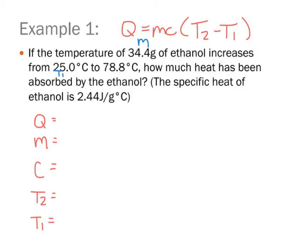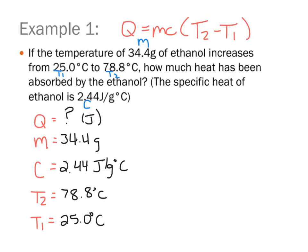increases from 25, so that means that's the initial or T1, and it goes up to 78.8, that's my T2 or my final, how much heat has been absorbed by the ethanol? And the specific heat is given to me as 2.44 joules per gram degrees Celsius. So after listing our givens, we find that we are missing Q, but it does say how much heat, so it makes sense that Q should be blank. We should keep in mind that Q should be found in units of joules.